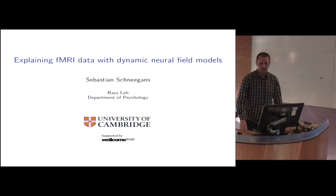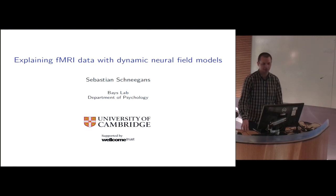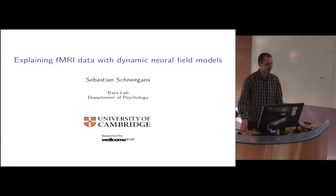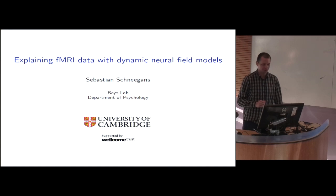I will be talking about a method to reconstruct spatial representations from fMRI data, in particular spatial working memory representations, and then presenting a type of neural model that we have used to account for certain aspects of some findings in these reconstructions. I should mention that I'm not really an fMRI researcher, so all the fMRI data and this reconstruction method is from the lab of John Stefanski; I only did the neural model to explain some of this data.